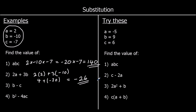Question 3 is b minus c. So it's negative 10 take away negative 7. When we take away a negative, we go up. So it's the same as negative 10 plus 7, which is negative 3.